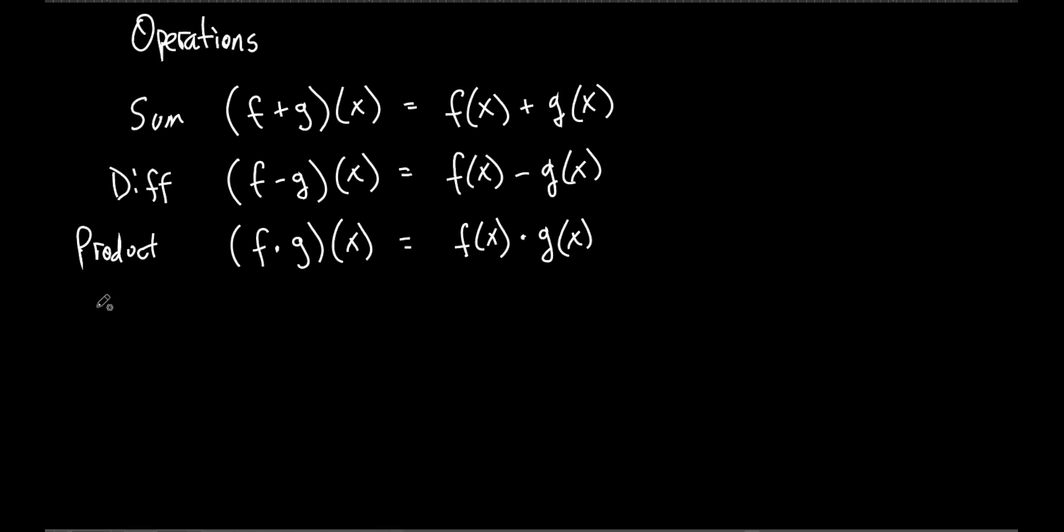And then we have a quotient. What is quotient in math? Division. So what do you think that's going to look like? f over g of x. So if we break that down, what do you think it's going to be? f of x over g of x. Very good. That's pretty simple, isn't it?